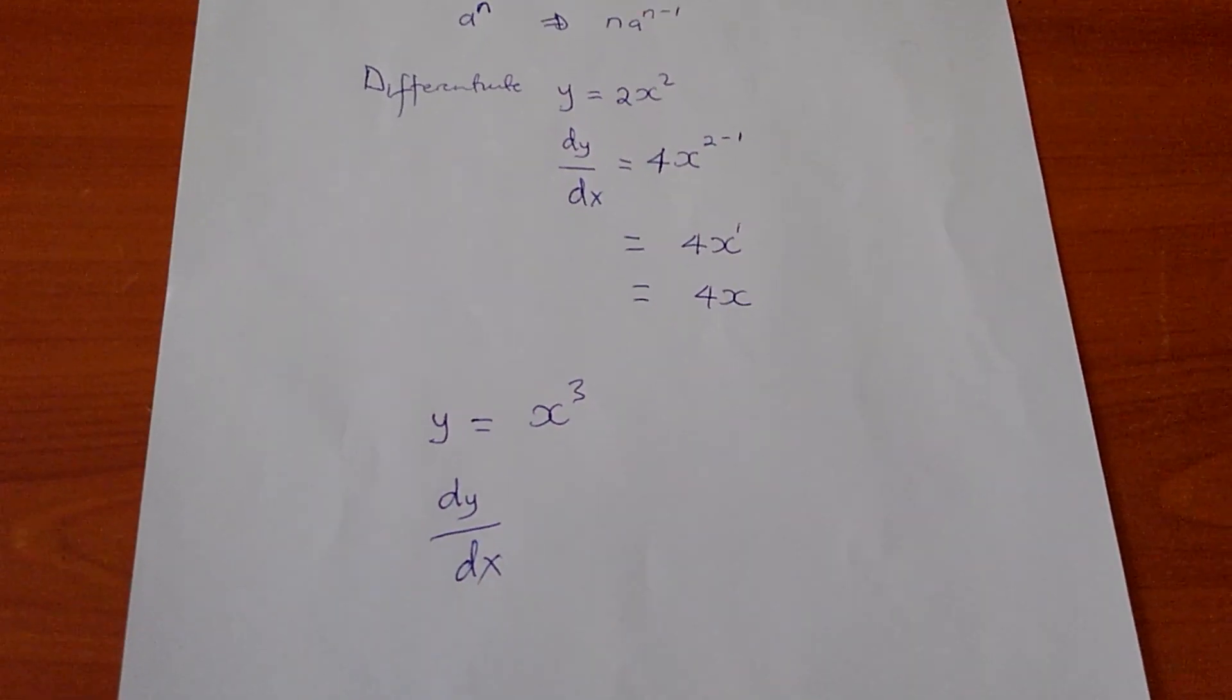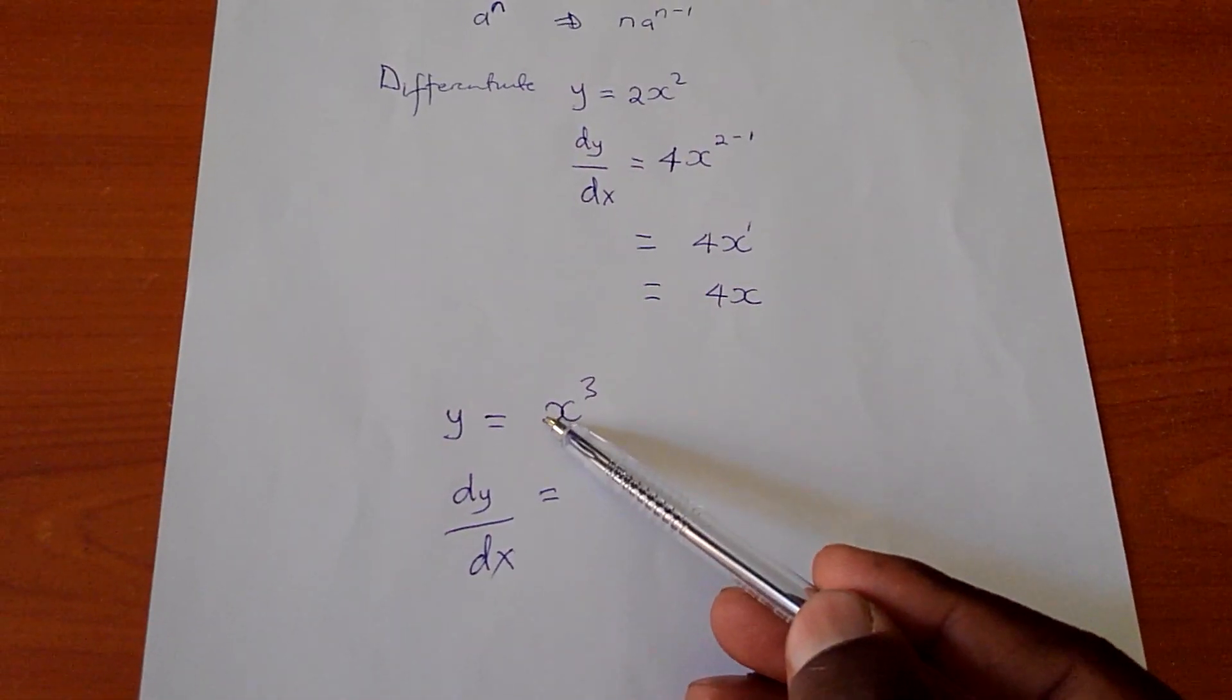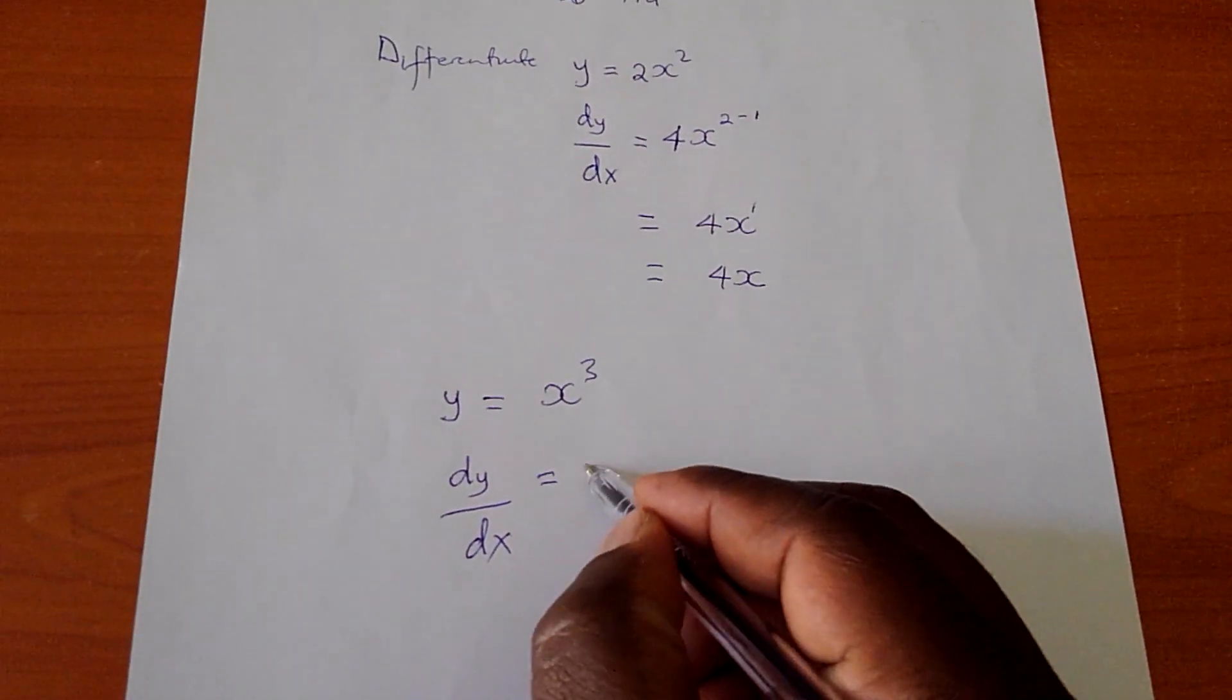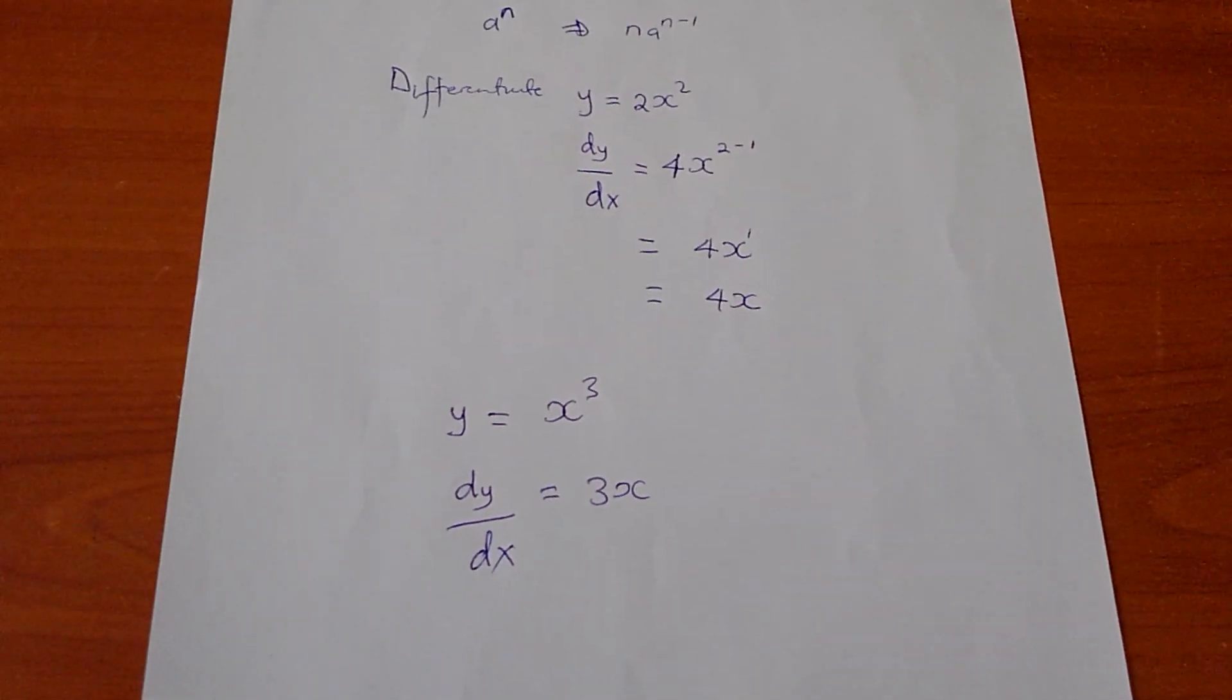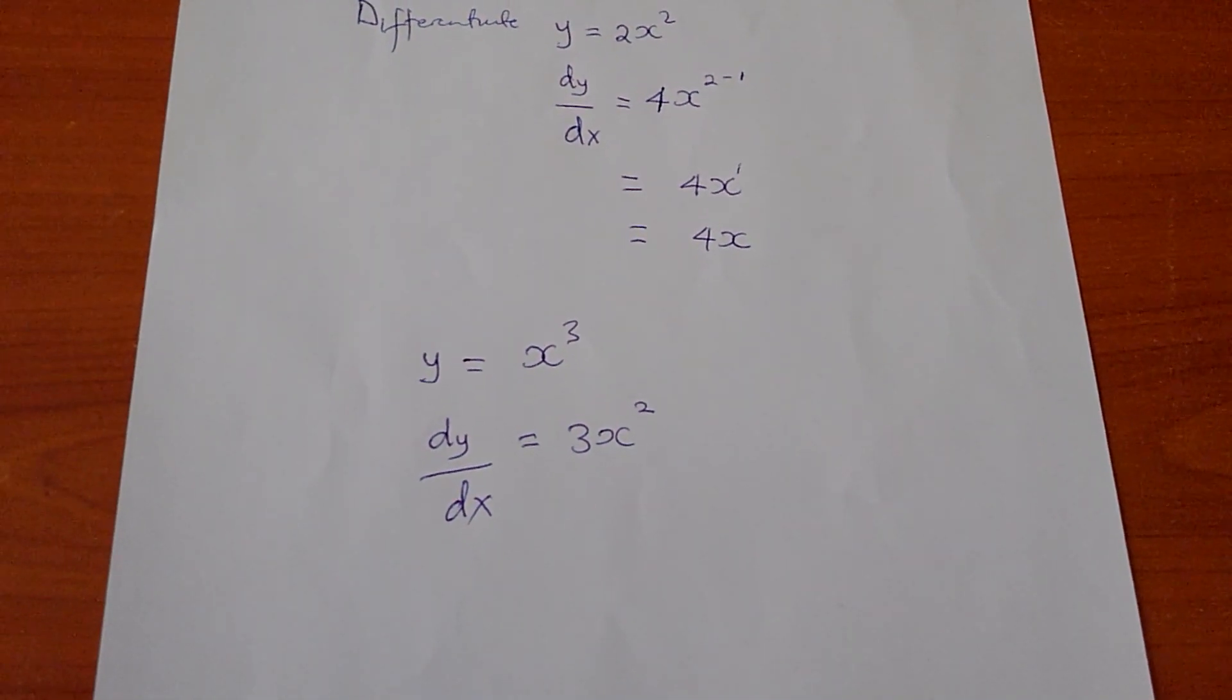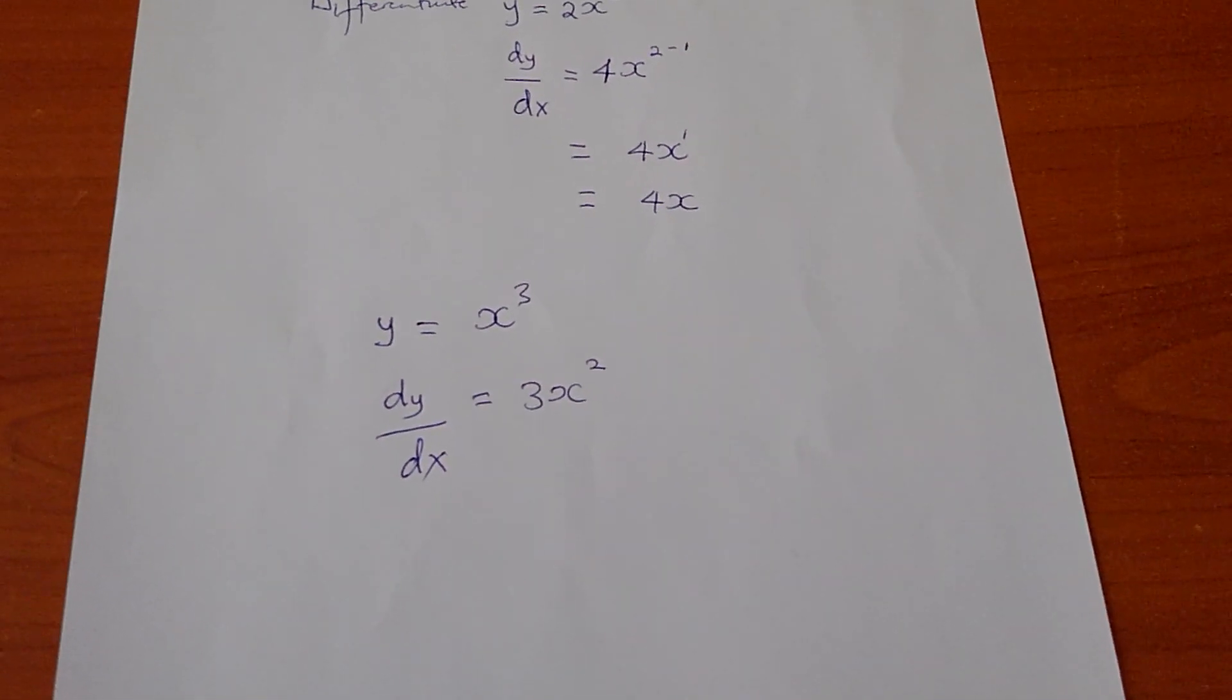Remember, you multiply by the power times the coefficient of x, which is 1. So, I will have 3x. Remember, the power we subtract 1, so to power 2. I will remain with 3x to power 2. So, that's differentiation in simple terms. That's how we work out differentiation in certain numbers.